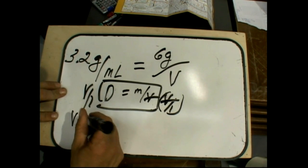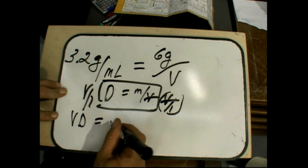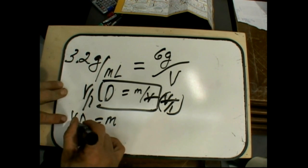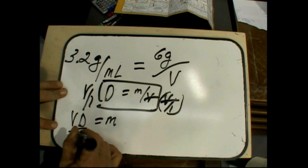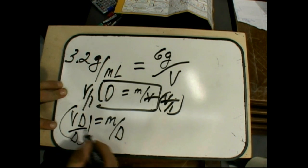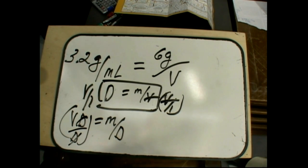So now you've got the volume canceled. You end up with V, D. Oh, my gosh. Now what you want to do, you want to isolate the volume. So you divide both sides by the density. What you get is mass over density is the volume.